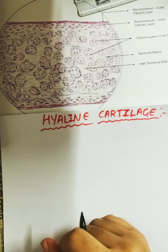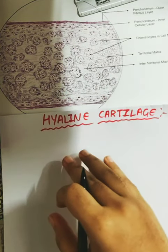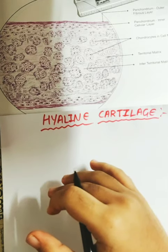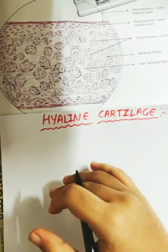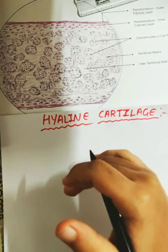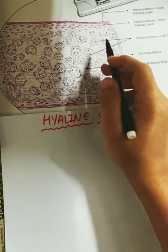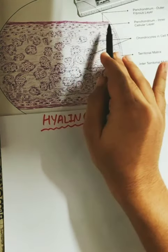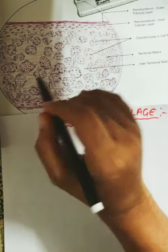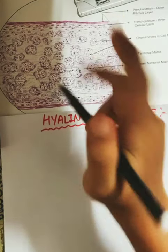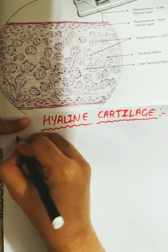This slide is about the hyaline cartilage. As you can see in the diagram, there is a layer called the perichondrium or perichondrial layer. In the perichondrium layer, the outer layer is the outer fibrous layer and the inner layer is the cellular layer. In hyaline cartilage, there are two main perichondrium layers.